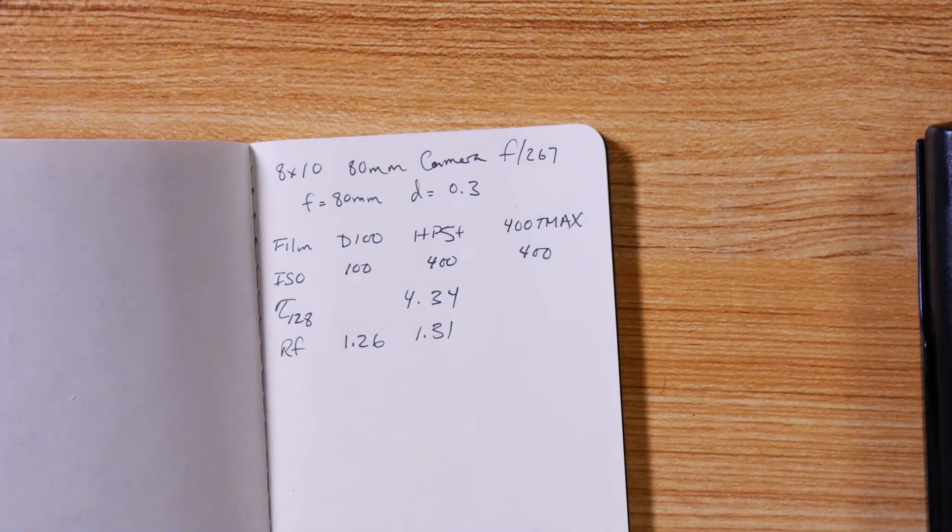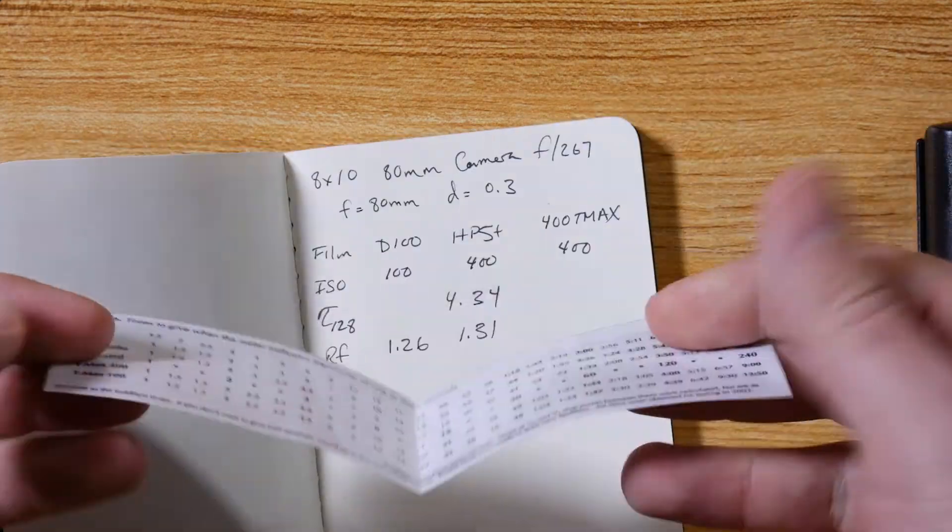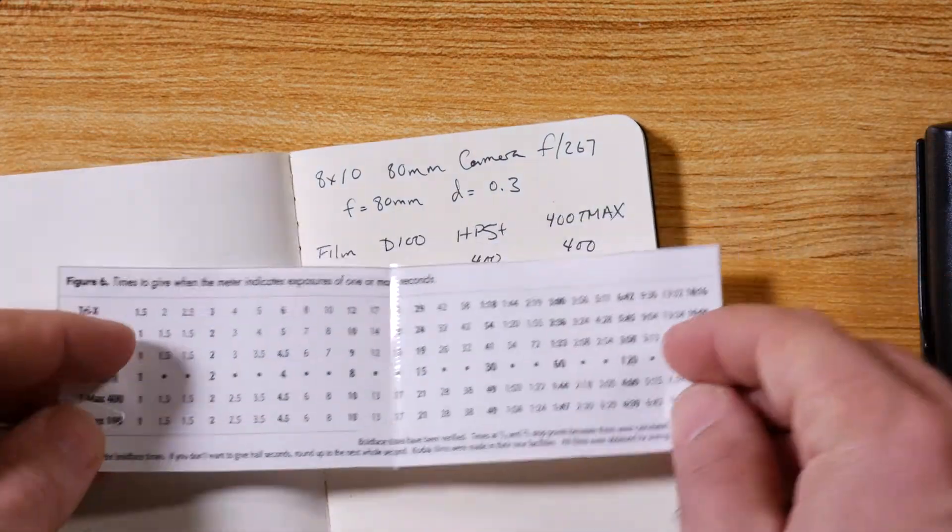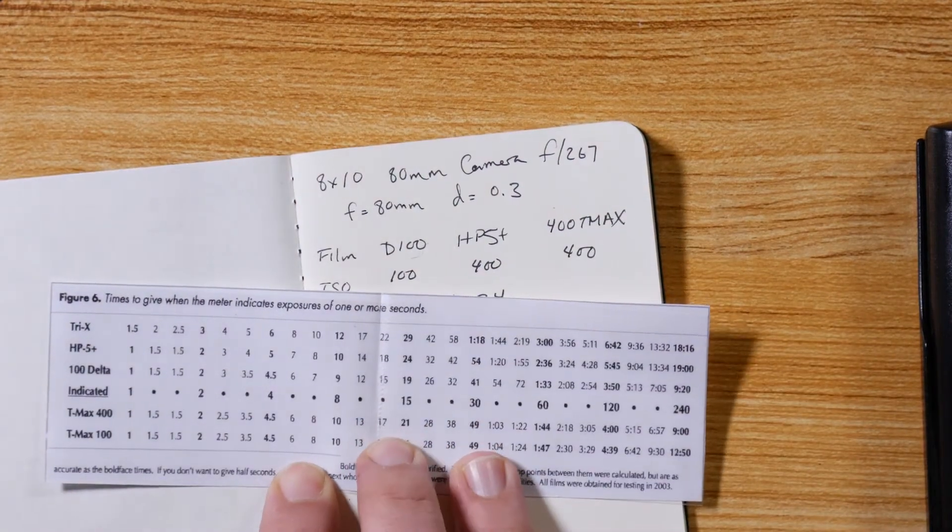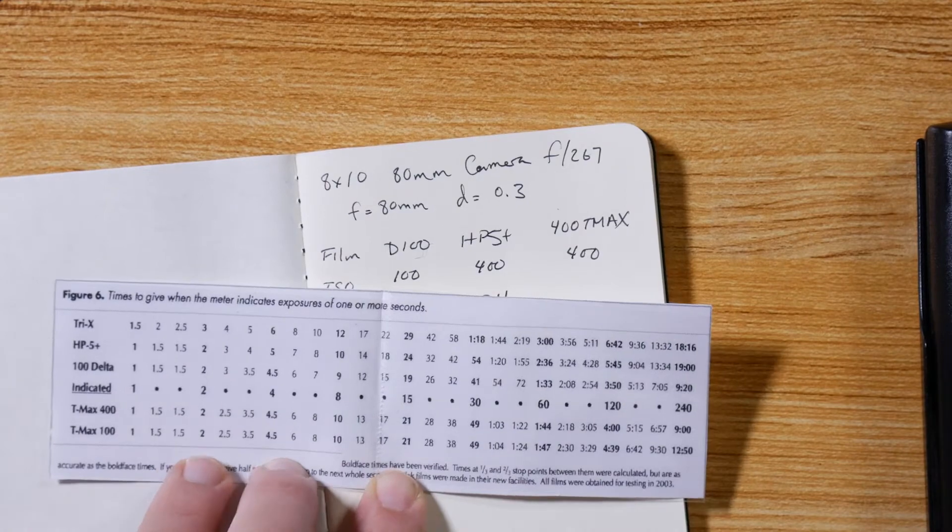So instead I went online and read a bunch of forums and found this little handy-dandy sheet which I then printed out and put tape on it so that it's not gonna fold up and break. This here looks to be a figure from a table for someone who has done the work.